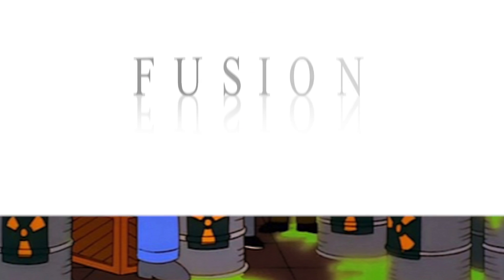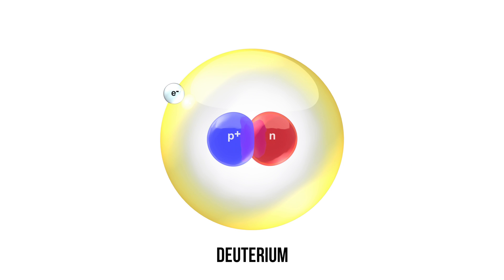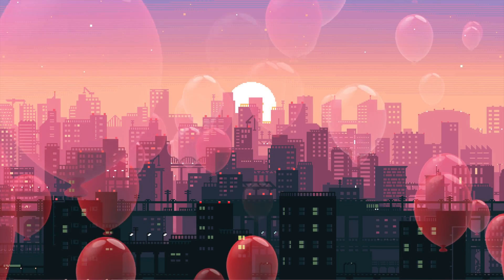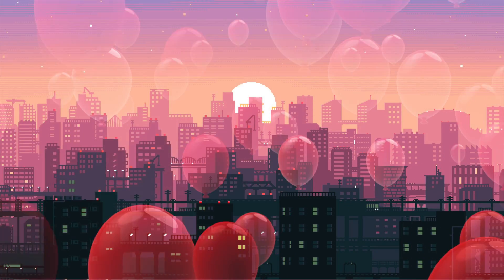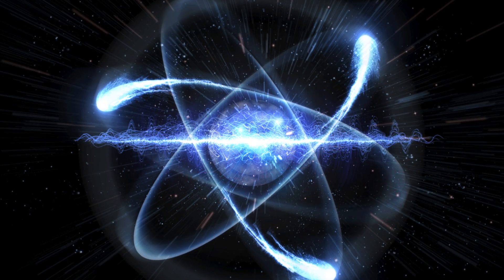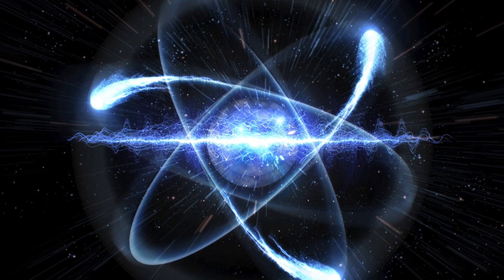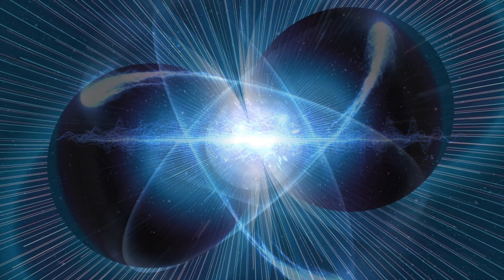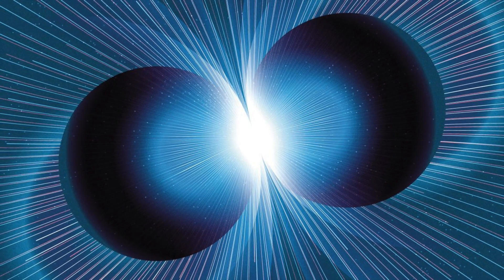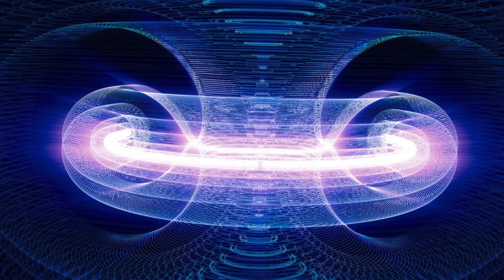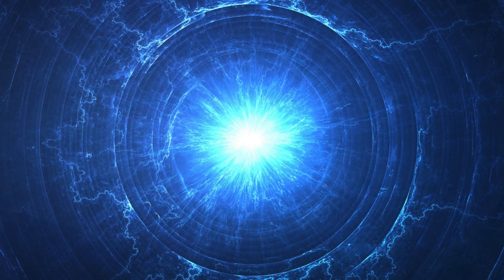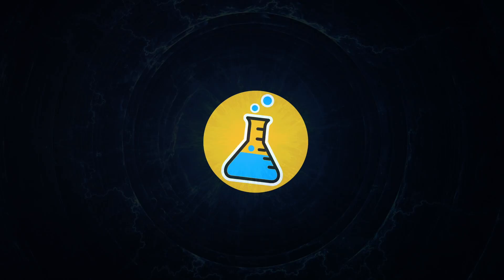Nuclear fusion will solve both of these problems. It starts with simpler material — deuterium. After the reaction, you are left with helium. Fusion, on the other hand, is not easily controlled and is expensive to create suitable conditions. So instead of shooting a neutron at an atom as in a fission reaction, you have to get two positively charged nuclei close enough together to get them to fuse. This means you have to have super high atomic energies to start the nuclear fusion, and at present, they are all experimental.